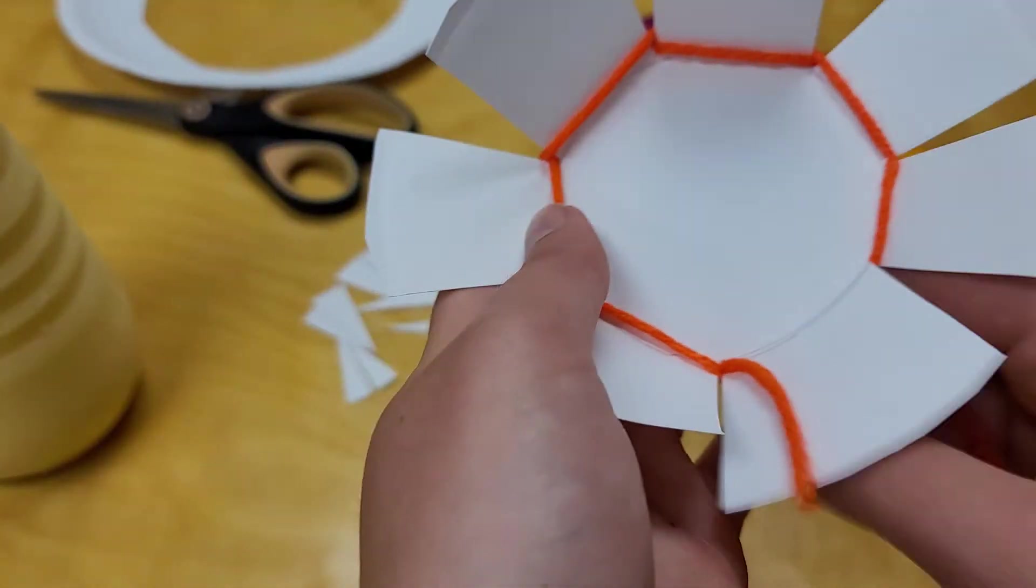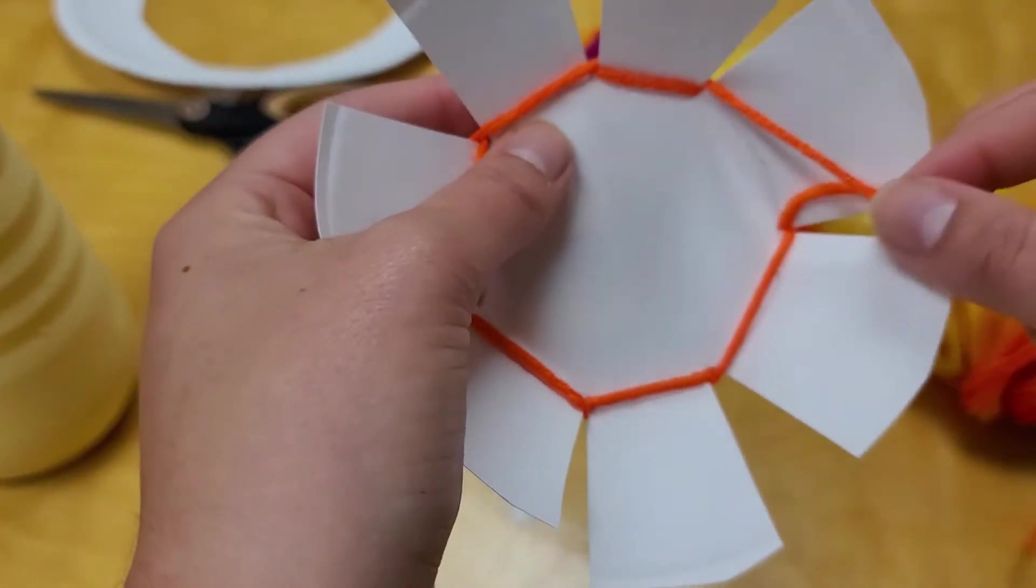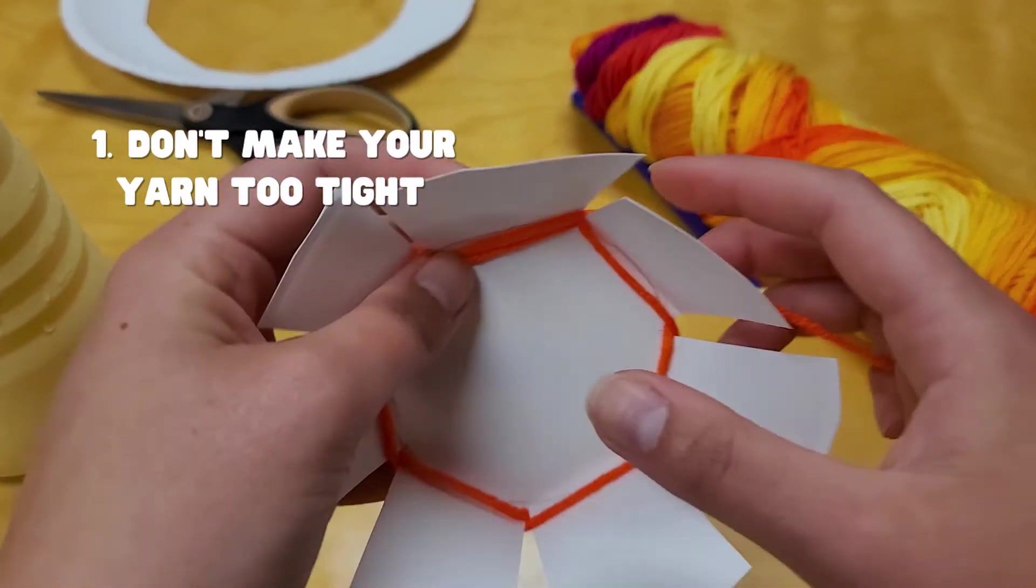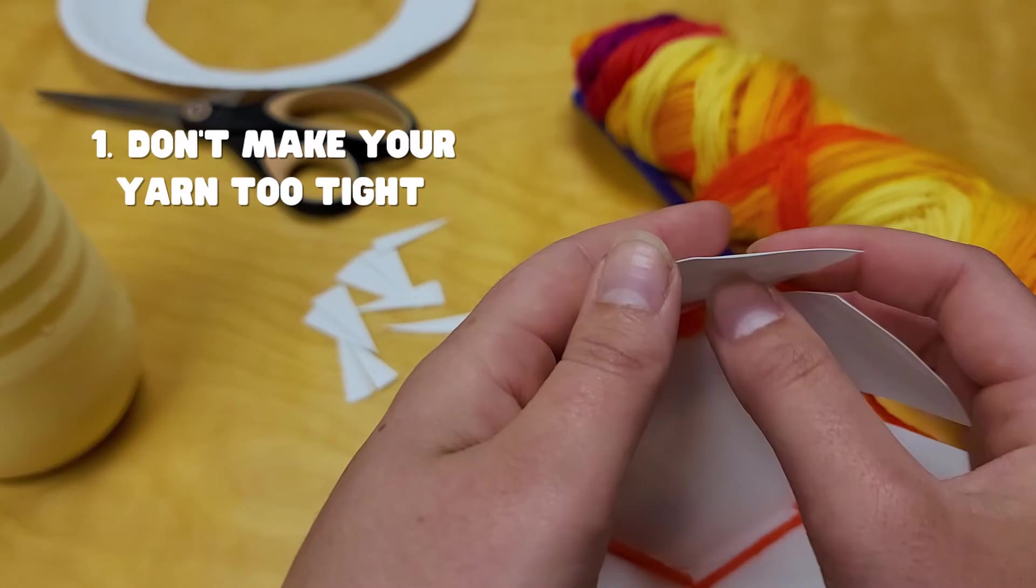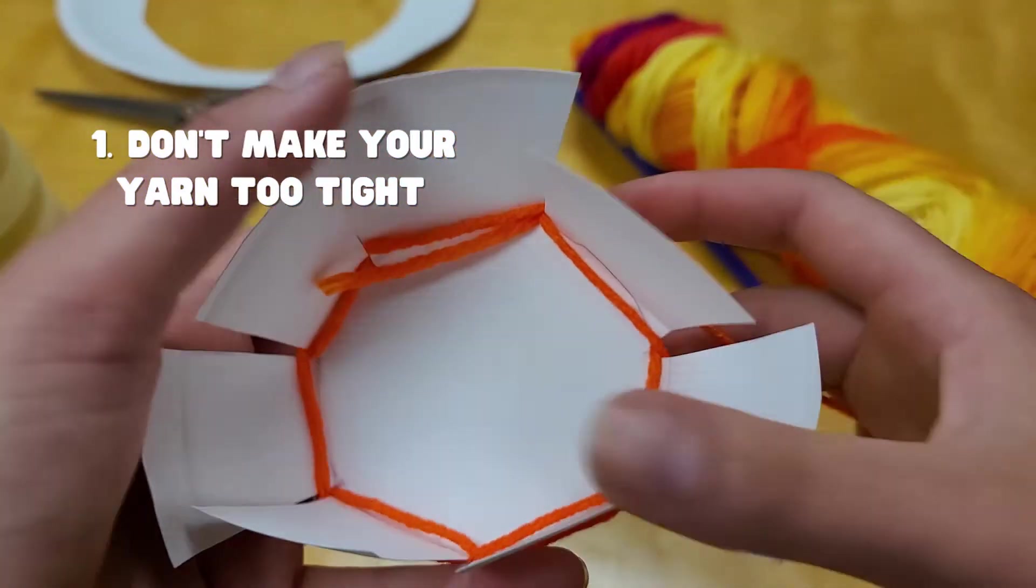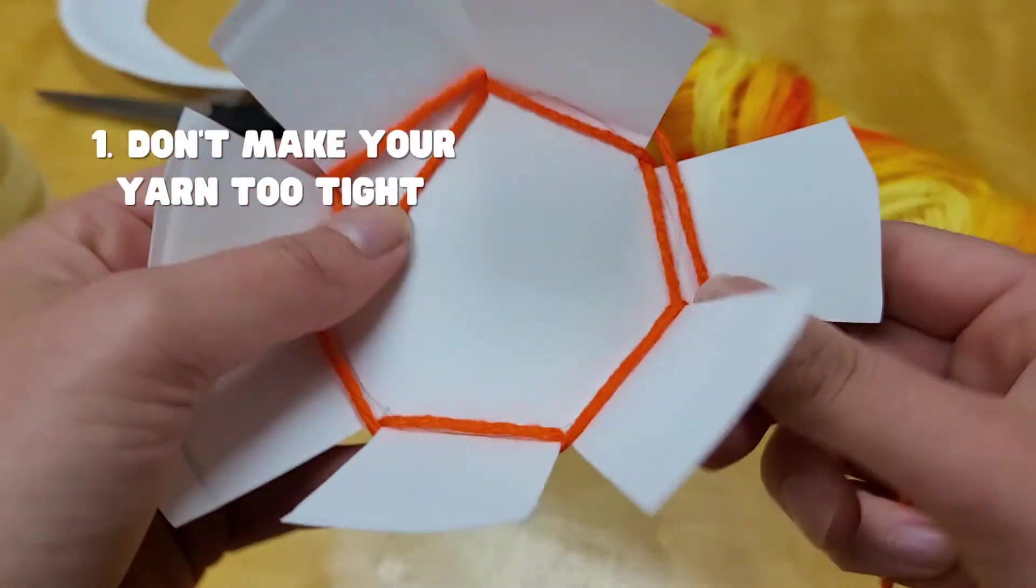A couple things to remember while you're doing this: One, don't make your yarn too tight. If you go super tight, as your basket comes together, you're going to have a gap between your yarn and your plate, and you don't want a gap. It's weird looking.